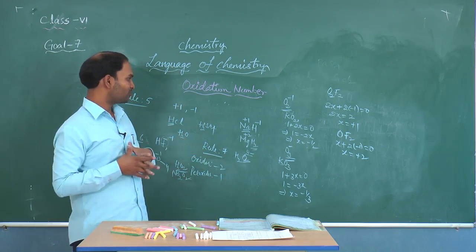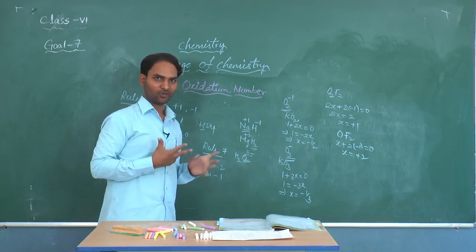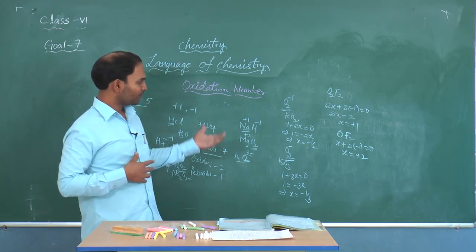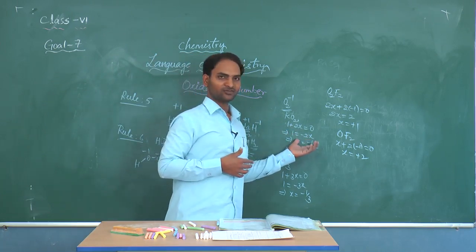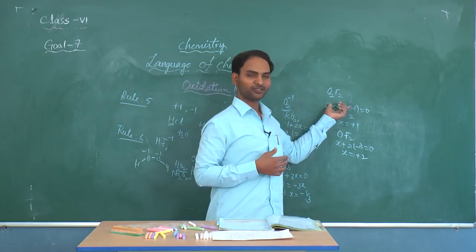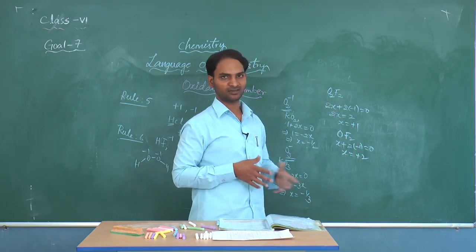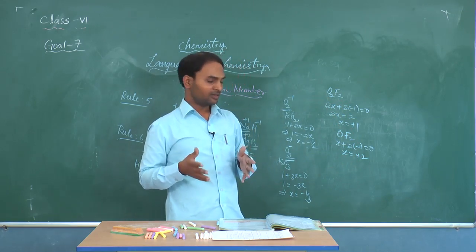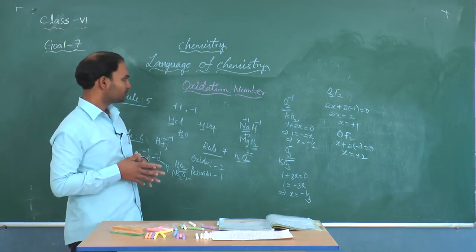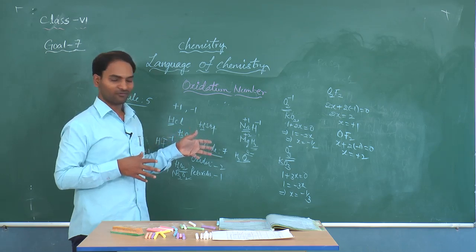To summarize Rule 7: oxygen exhibits -2 in normal oxides, -1 in peroxides, -1/2 in superoxides, -1/3 in ozonides, and +1 as well as +2 in oxy fluorides. This completes Rule 7.